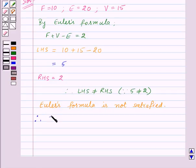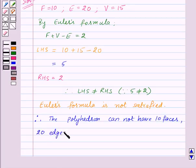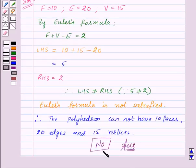Therefore the polyhedron cannot have 10 faces, 20 edges and 15 vertices. So our answer for this question is no.